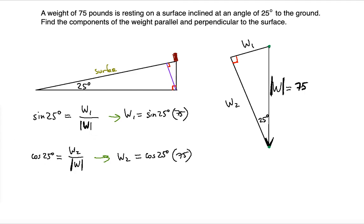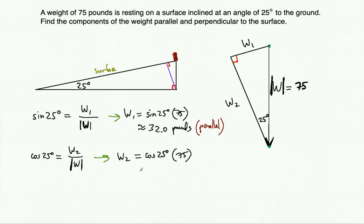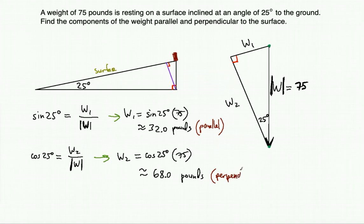So if you do this correctly, the first one should give you about 32.0 pounds — that is the component parallel to the surface. And the second should give you about 68.0 pounds, which is the perpendicular component to the surface. Thanks so much for watching and see you in the next video.